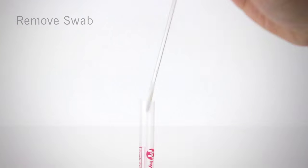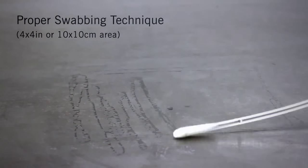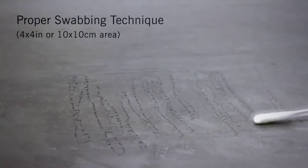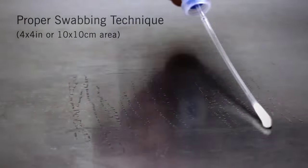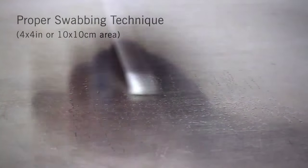Remove the swab from the tube. Swab a 4x4 inch or 10x10 cm square area in a criss-cross pattern, swabbing the area with even coverage.